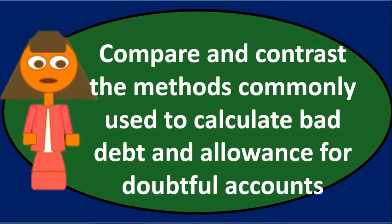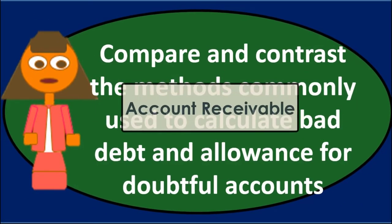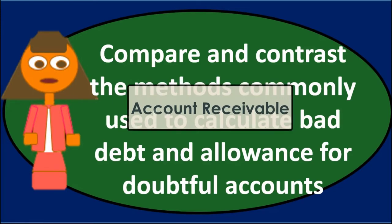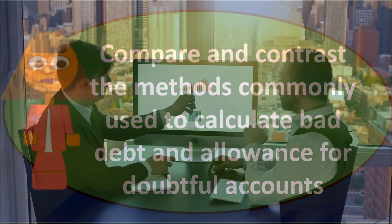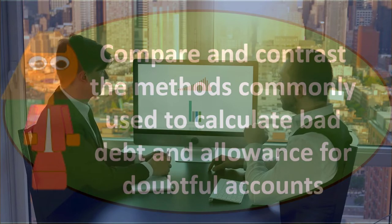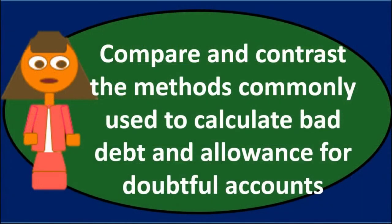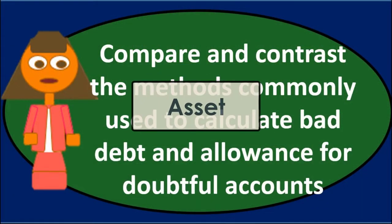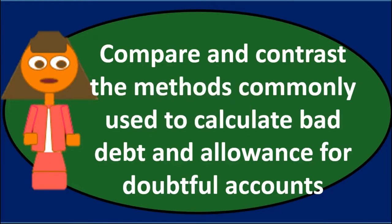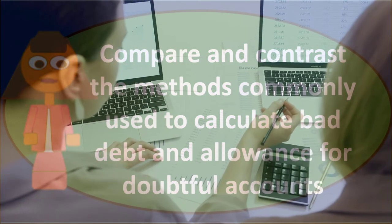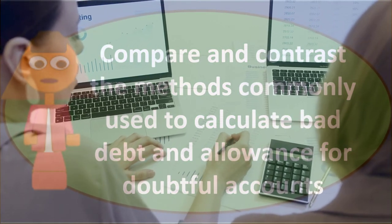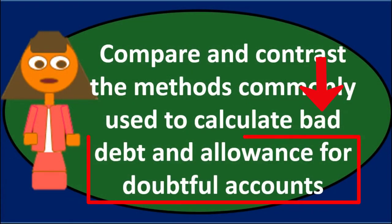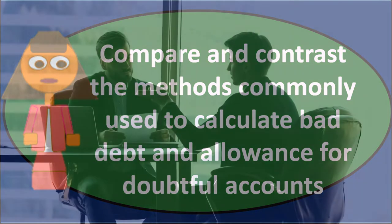Bad debt and the allowance for doubtful accounts relate to accounts receivable. Accounts receivable represents amounts owed to us from customers, typically from past sales. It is a current asset, and the problem is that it could be overstated — because some customers who owe us money may never actually pay.